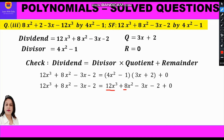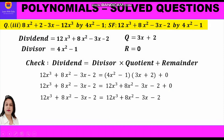So: 4x² into 3x is 12x³, 4x² into 2 is 8x², minus 1 into 3x is minus 3x, and minus 1 into 2 is minus 2, plus 0. Simplifying, we get 12x³ plus 8x² minus 3x minus 2 on the right hand side.